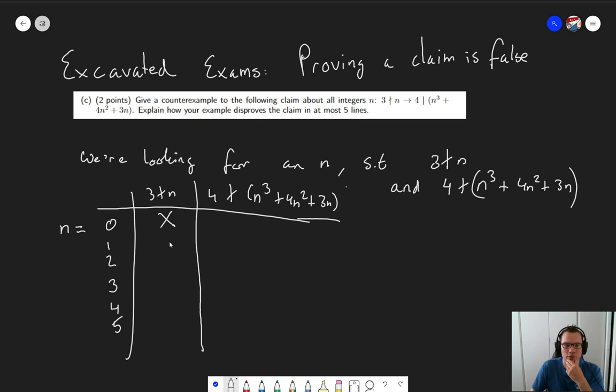3 does not divide 1. Yeah, that's true. Does 4 divide n to the third? 1 plus 4n squared, plus 4 plus 3n plus 3. 1 plus 4 plus 3 equals 8. 4 divides 8. Yeah, 4 does divide 8. So this thing is false. And we want both of these to be true now.